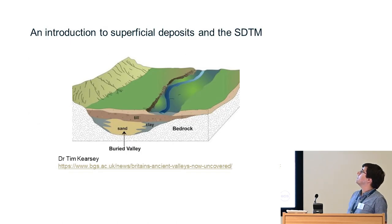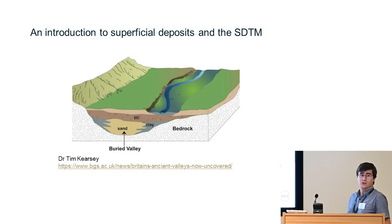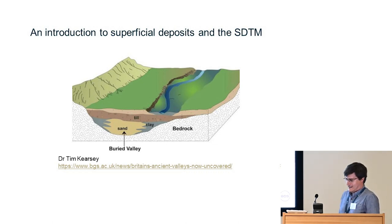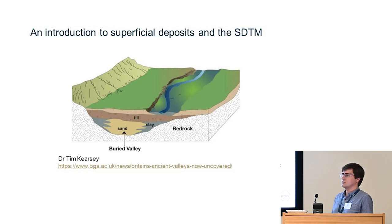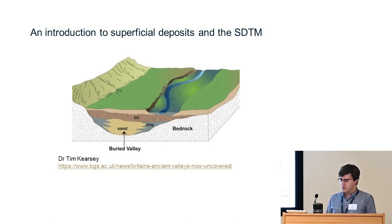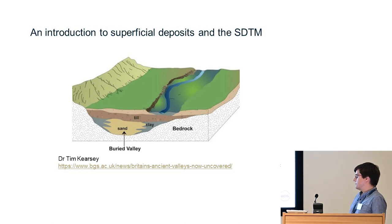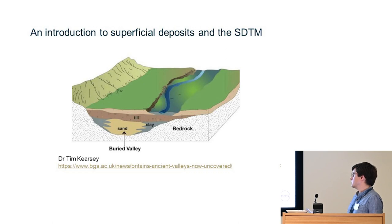So, what is a Superficial Deposit? A Superficial Deposit, previously known as drift — so you may also see the Superficial Drift Thickness Model mentioned in some BGS literature — are the youngest geological deposits formed during the most recent period of geological time. They rest on bedrock where they were laid down by various natural processes such as actions by ice, water, and wind.